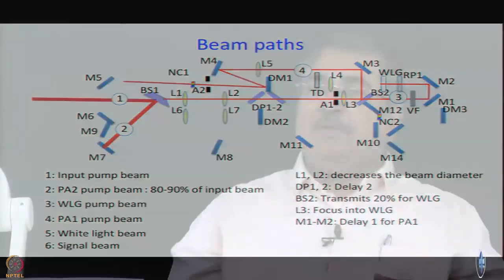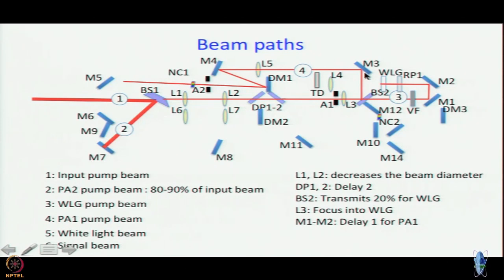The beam diameter is reduced, then it goes through a couple of plates almost at Brewster angle, but whose tilt can be controlled to bring in some delay in the path. After that it goes through a departure A1 onto L3 which is a focusing lens and immediately afterwards there is another beam splitter BS2 which transmits about 20 percent, reflects about 80 percent.